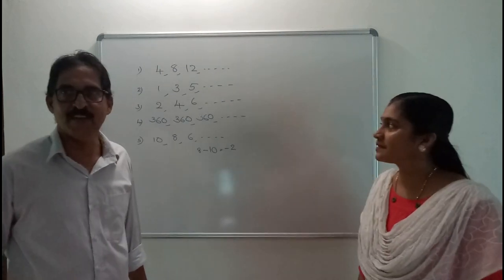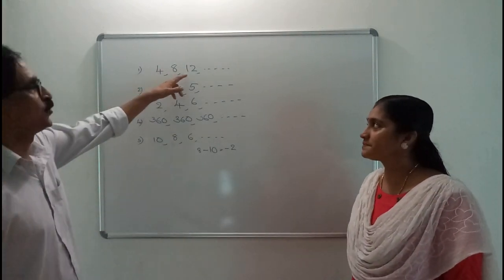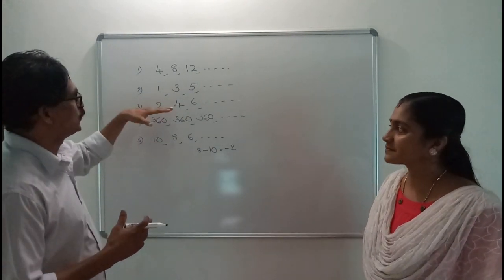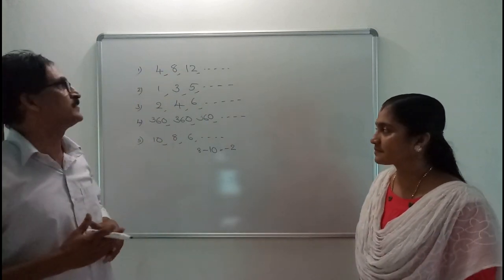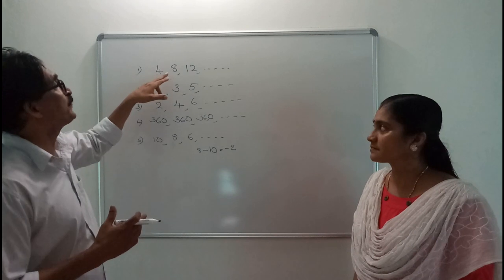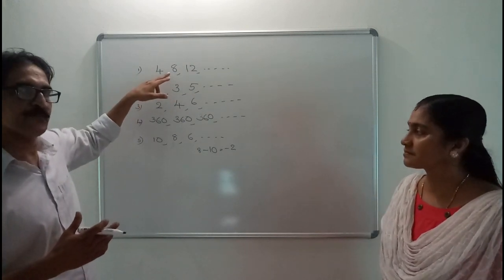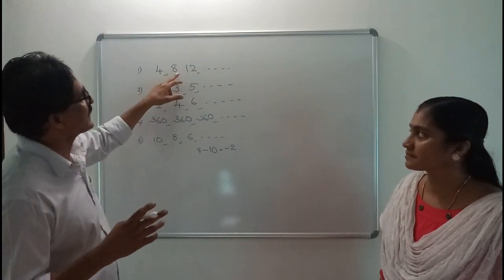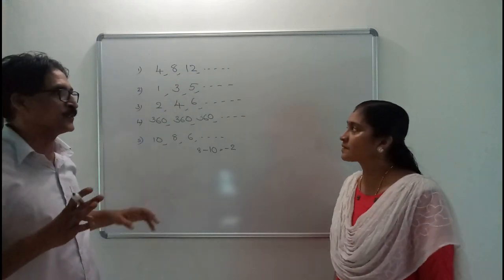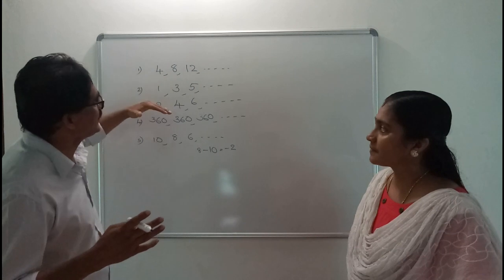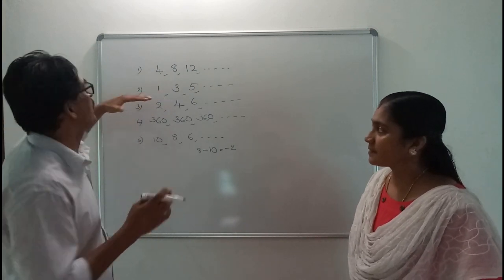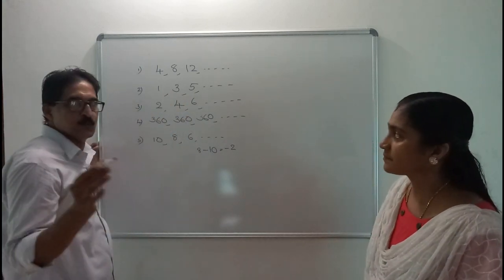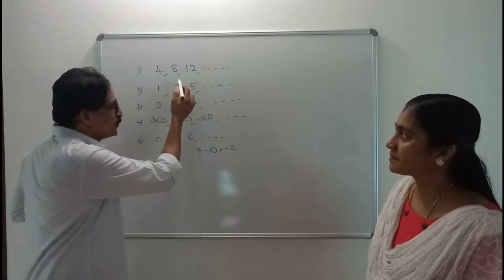We have studied various sequences. For example, 4, 8, 12, etc. — these are all called arithmetic sequences. And the next is 1, 3, 5, etc., and 2, 4, 6, etc. You see, if we subtract the first term from the second term: 8 minus 4 is equal to 4. Similarly, if we subtract the second term from the third term: 12 minus 8 is equal to 4. It goes on like this. In the second sequence also, 3 minus 1 is equal to 2, and 5 minus 3 is equal to 2.